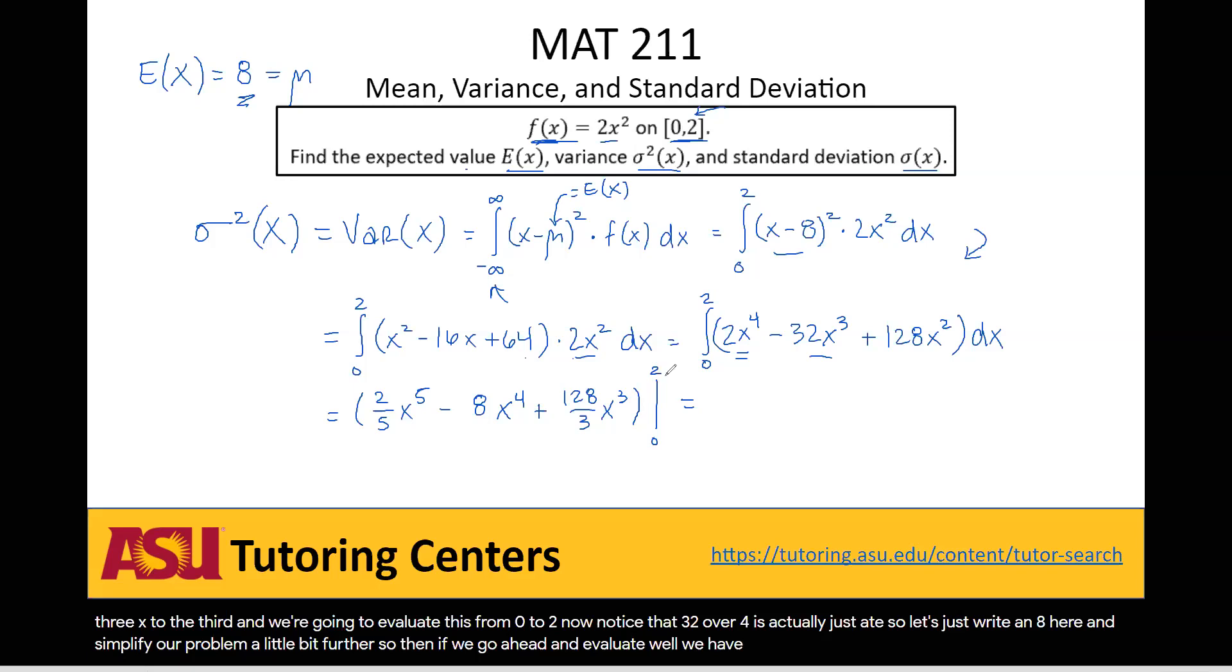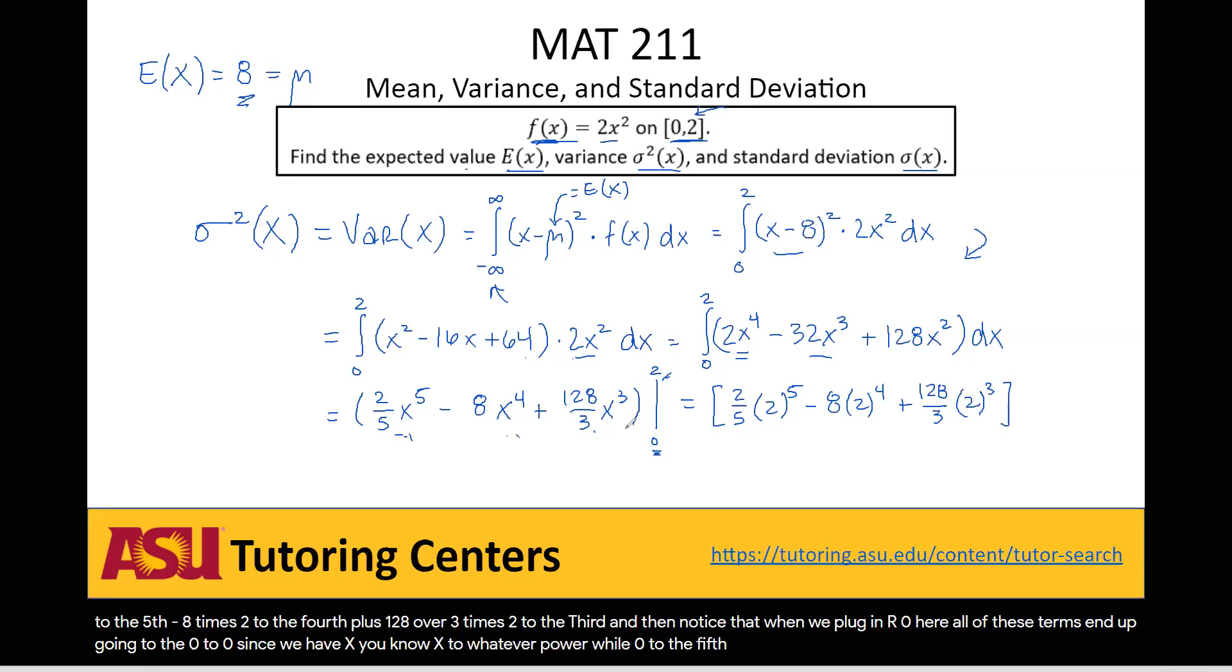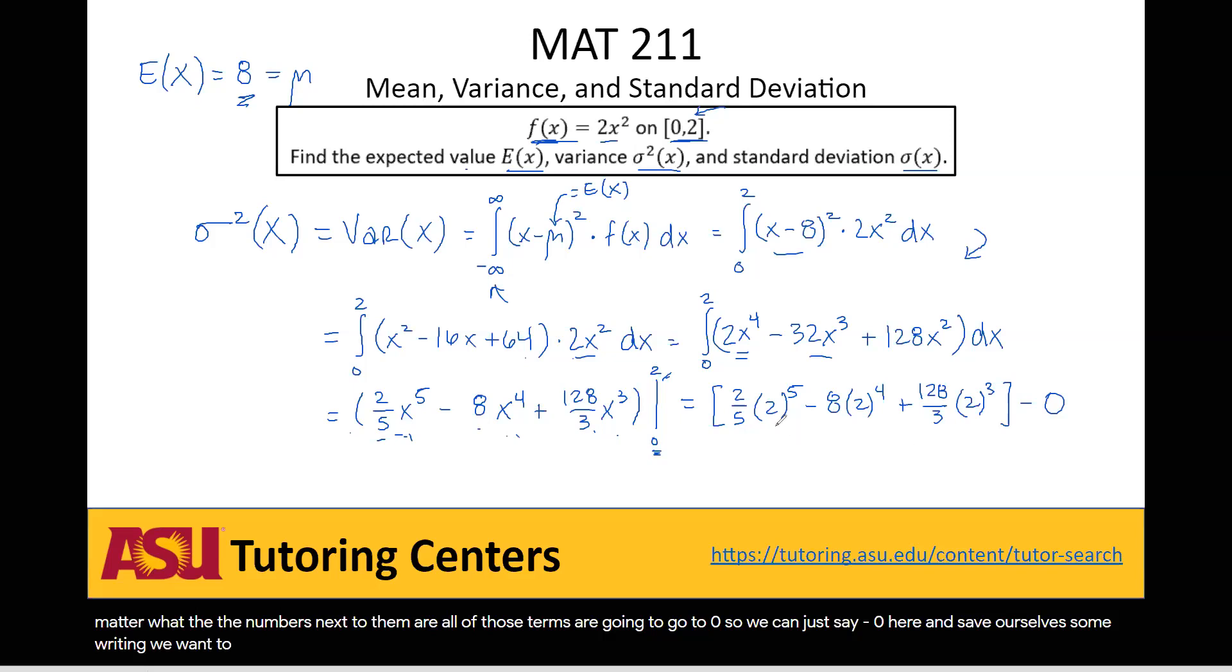So then if we go ahead and evaluate, well, we have for our 2 here, we're going to have 2 over 5 times 2 to the 5th minus 8 times 2 to the 4th plus 128 over 3 times 2 to the 5th. And then notice that when we plug in our 0 here, all of these terms end up going to 0. Since we have x to whatever power, well, 0 to the 5th, 0 to the 4th, 0 to the 3rd, that's all still 0. So it doesn't matter what the numbers next to them are. All of those terms are going to go to 0. So we can just say minus 0 here and save ourselves some writing.